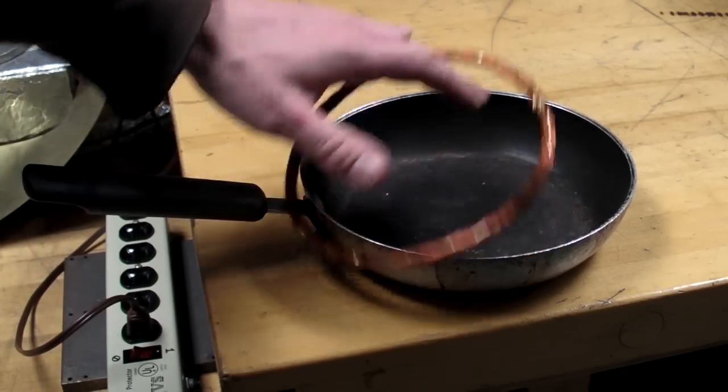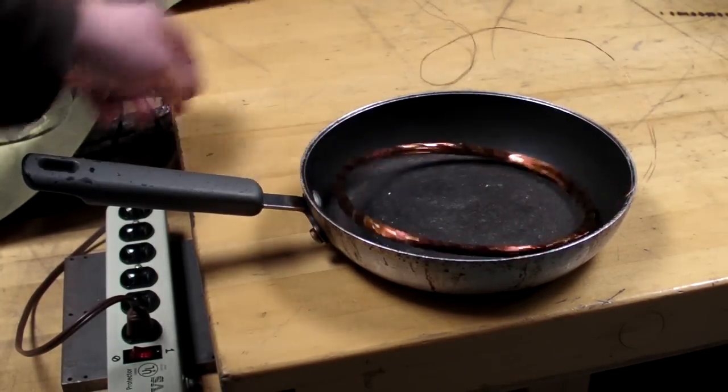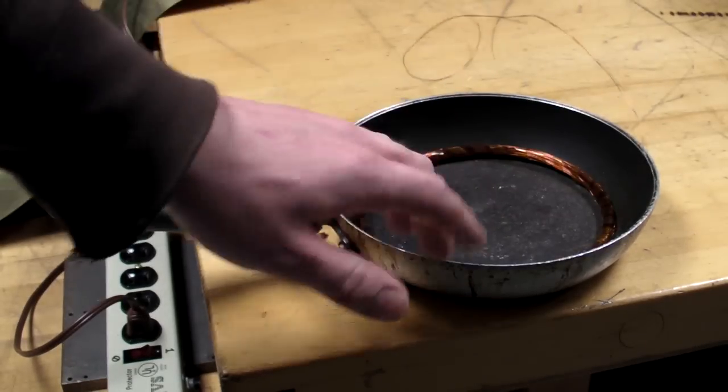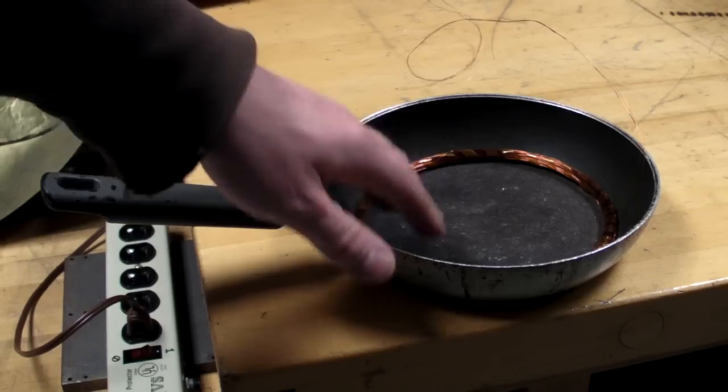And you can see it kind of has the tendency to just jump out the edge, and it might just be because this coil is too big for the skillet.